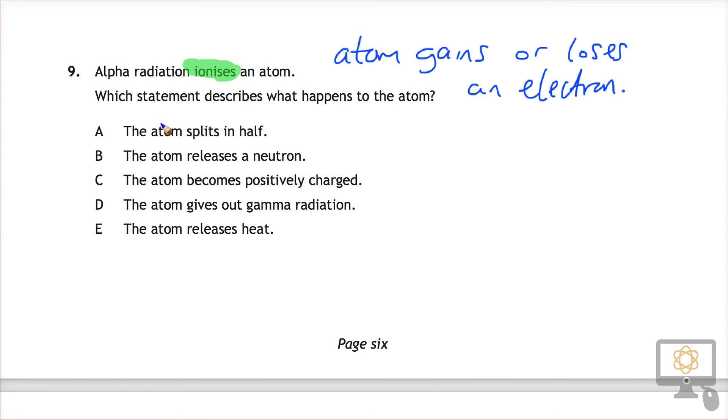So let's have a look. A, the atom splits in half. No, that might be something related to nuclear fission. B, an atom releases a neutron. Again, that's something which happens in the process of fission.